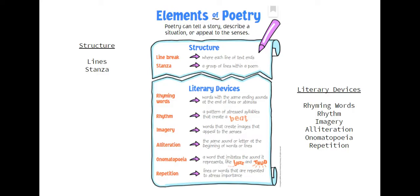Then you have the literary devices. Rhyming words is the same ending sound at the end of the lines or the stanzas. Rhythm is a pattern of stressed syllables that create a beat. Imagery are the words that create images that appeal to your five senses. Alliteration is the same sound or letter at the beginning of words or lines. Onomatopoeia is a word that imitates the sound it represents, like buzz or thud or beep beep. Repetition is when lines or words are repeated to stress importance.